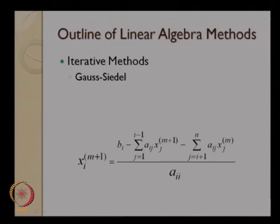In Gauss-Siedel, we use the most recent values of x. That means for computing x_i, we use the m plus 1th values of x_1 up to x_i minus 1 and we use the mth value from x_i plus 1 up to n because we do not have the m plus 1th values of x_j at this point. So, we use the latest value in computing x_i in Gauss-Siedel method.